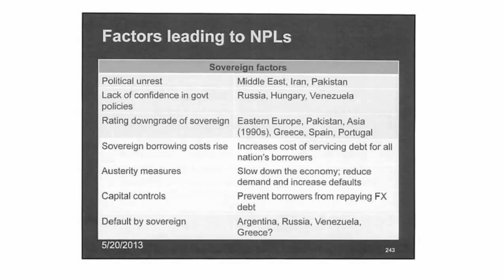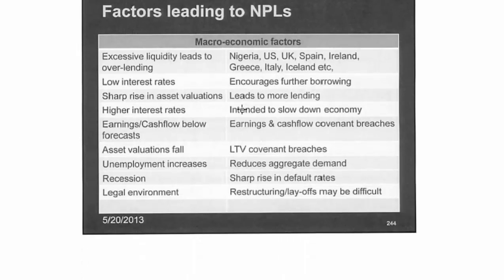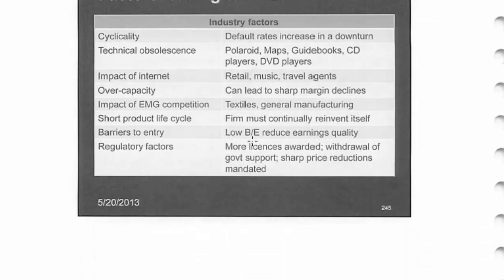Number three, you couldn't find it from a checklist. Here's a checklist — we have some examples of factors leading to non-performing loans. The factors include macroeconomic factors, low interest rates — that's kind of a checklist item. Cyclicality would be volatility in revenues, that's what it really is. Technical obsolescence — certainly that's a big one, but how do we predict that? It happens so suddenly.